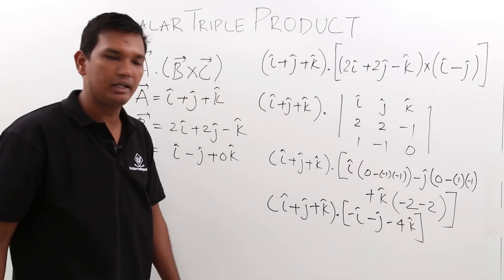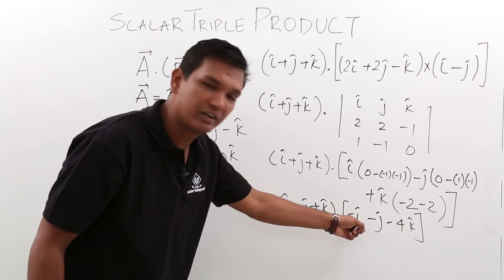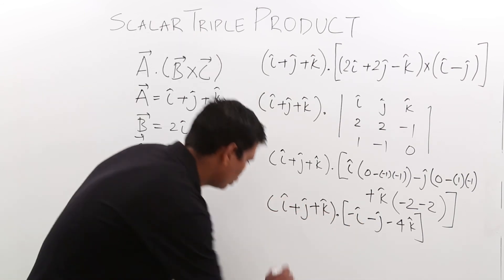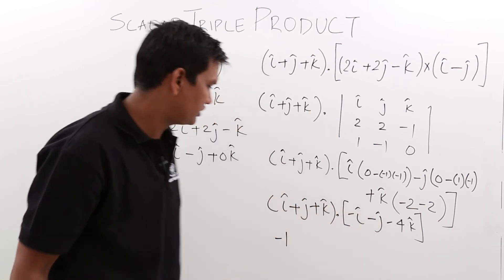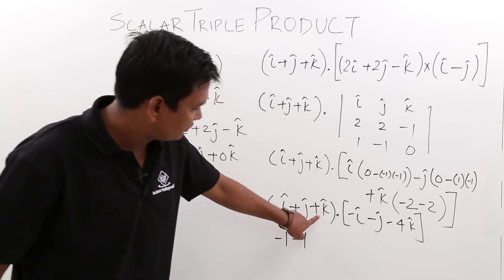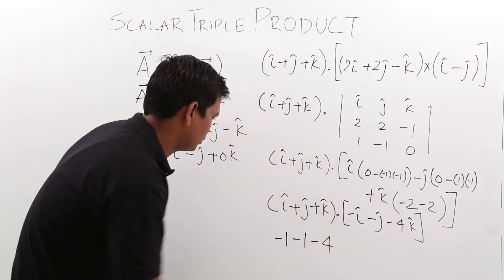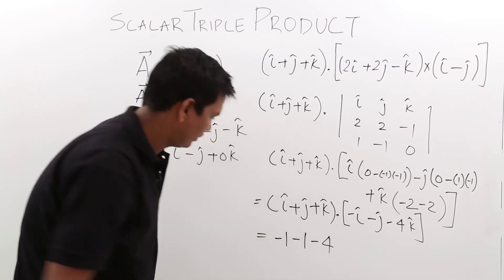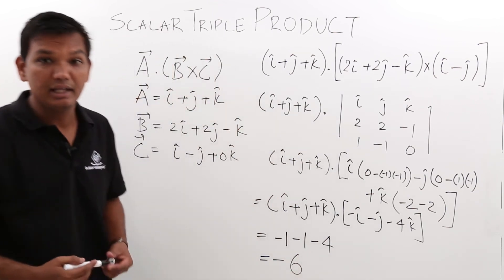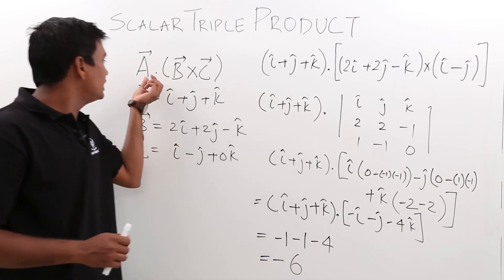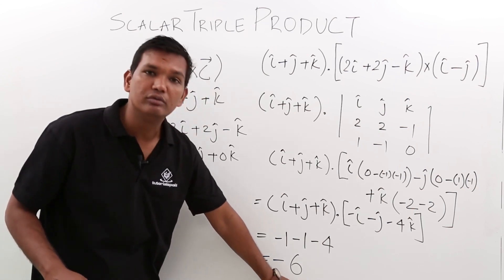When I take the dot product, I take i dot i, j dot j, k dot k. The magnitude of i is 1 and the i component is minus 1, giving 1 times minus 1 which is minus 1. The j component gives minus 1. The k component gives 1 times minus 4 which is minus 4. So minus 1 minus 1 minus 4 comes out to be minus 6, which is a scalar quantity, as we initially stated the result of A dot B cross C should be.